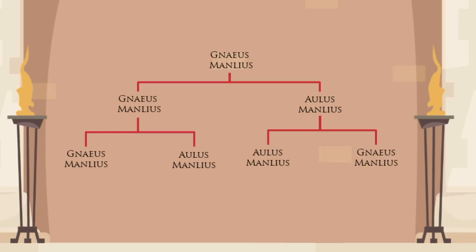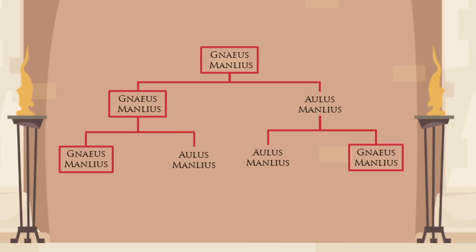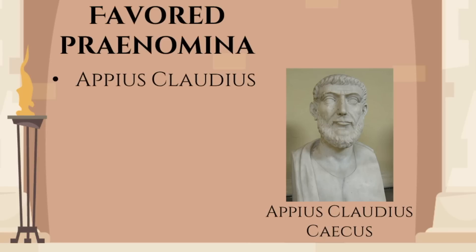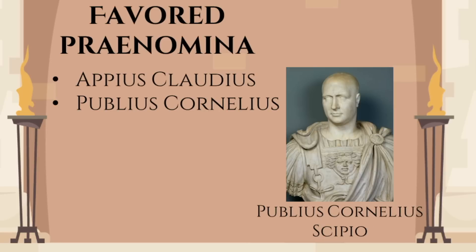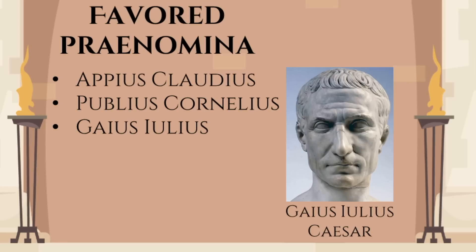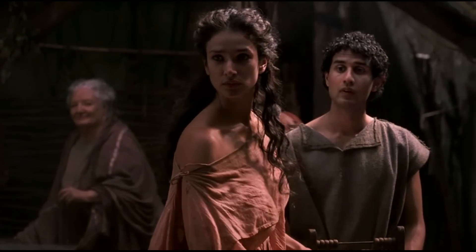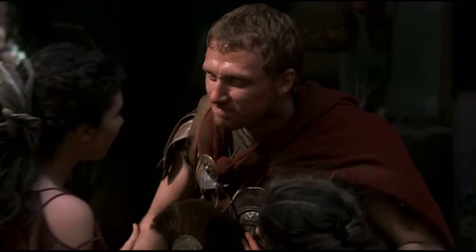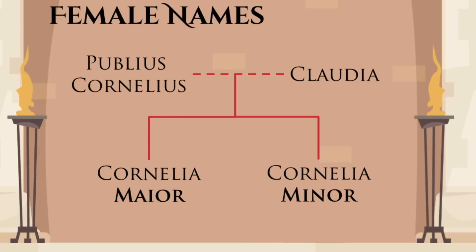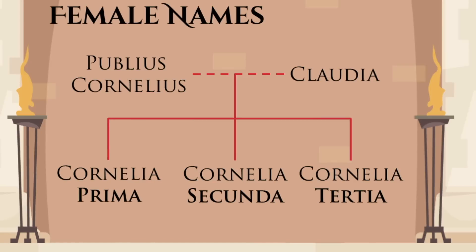Most noble families named their first boy after his father, and the rest after other male relatives. This meant that there would be a favored praenomen for each family, prevalent in every generation. Gens Claudia favored Appius; Gens Cornelia favored the names Publius and Lucius; and Gaius Julius Caesar had a whole bunch of distant uncles and cousins who shared his full name. To differentiate between daughters who didn't have praenomina, the Romans used ordinal adjectives. If there were two daughters, the older would generally be called Maior and the younger Minor. If there were more than two, they would be assigned numbers — Cornelia Prima, Cornelia Secunda, Tertia, Quarta, and so forth.